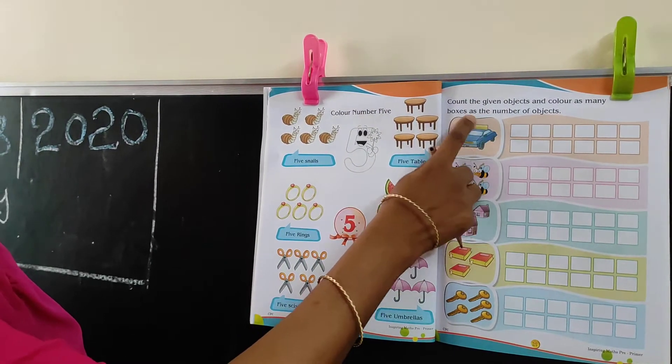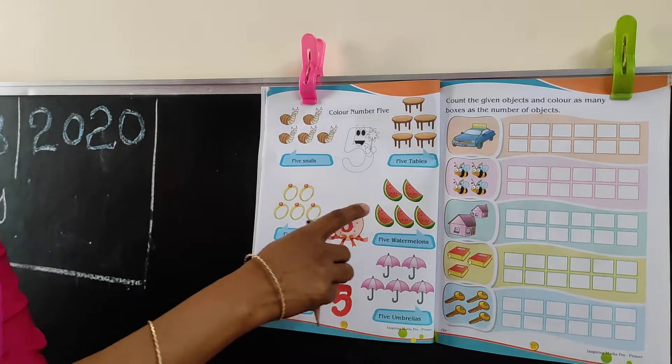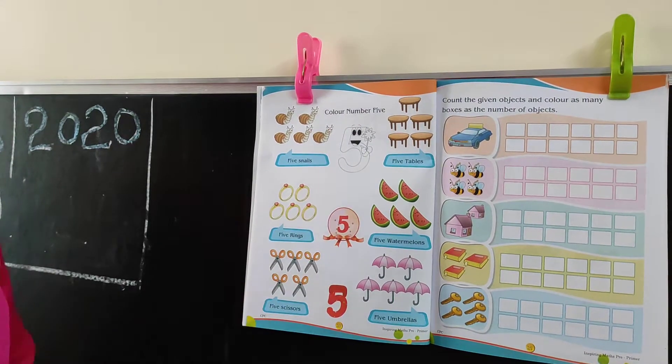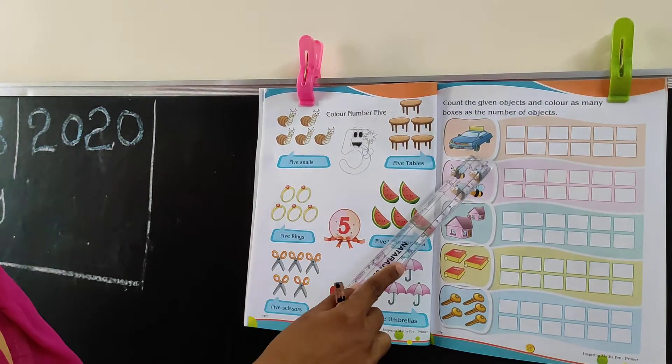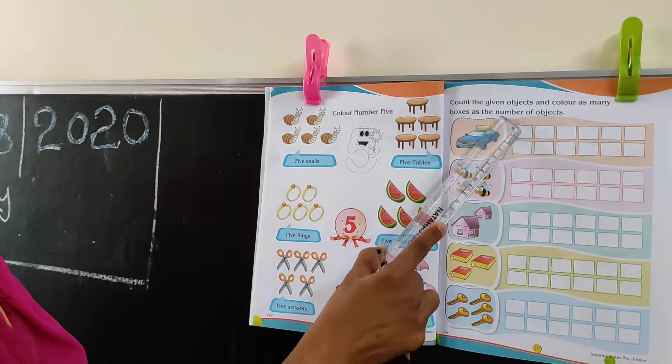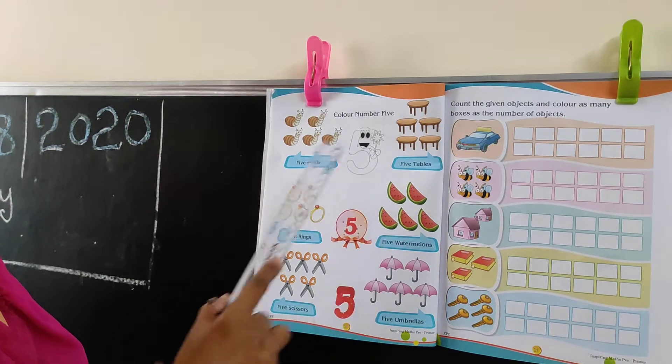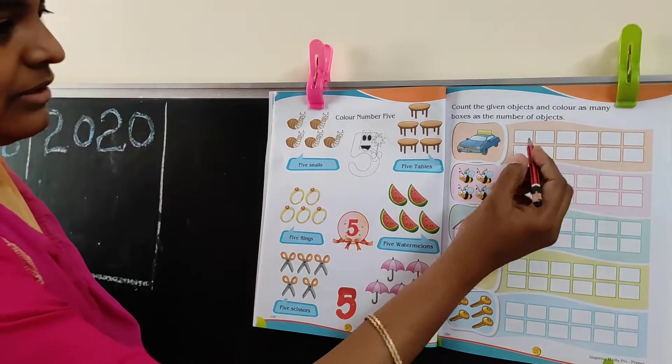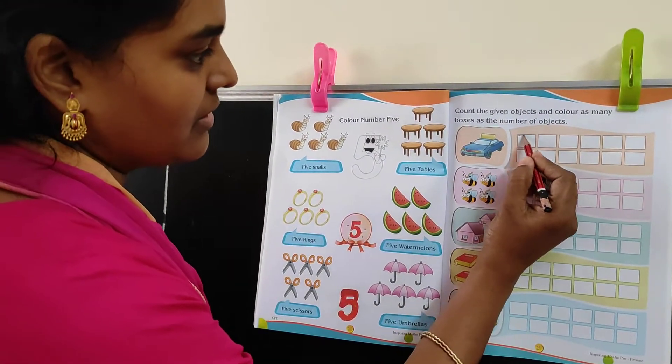What is this, children? Car. How many cars are in the box? One. You color one box.